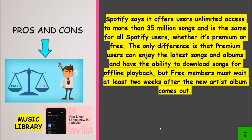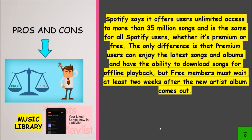The Music Library: Spotify says it offers users unlimited access to more than 35 million songs, and this is the same for all Spotify users whether it's premium or free. The only difference is that premium users can enjoy the latest songs and albums and have the ability to download songs for offline playback, but free members must wait at least two weeks after a new artist's album comes out.